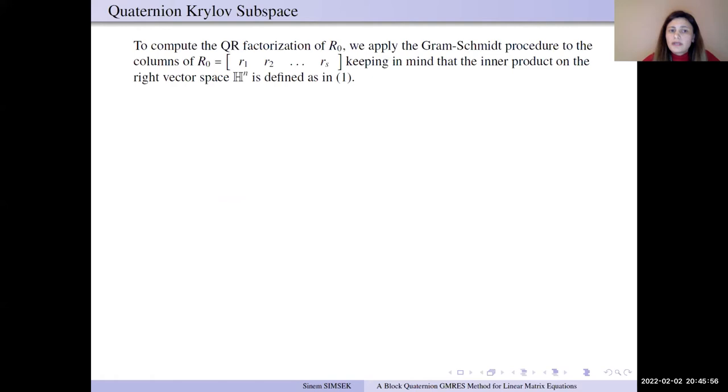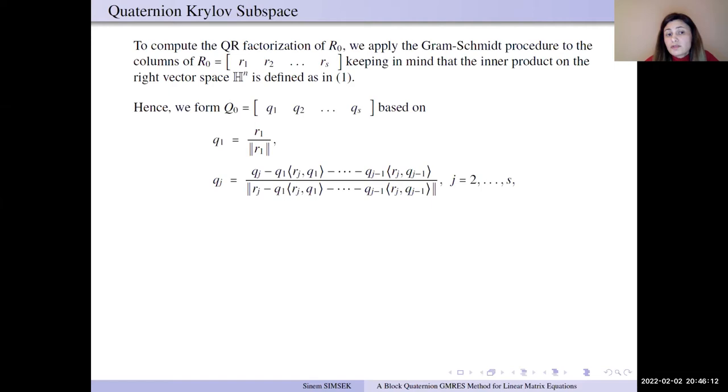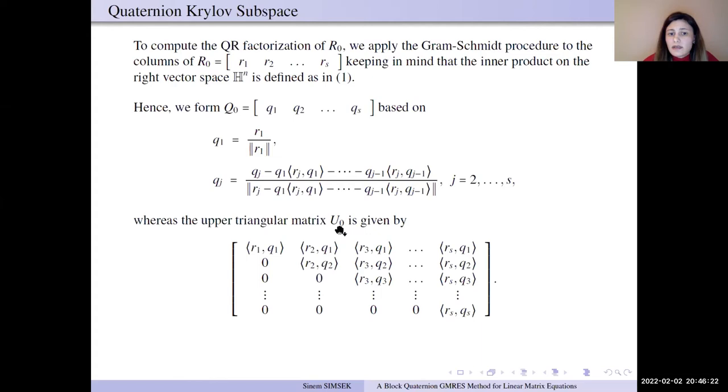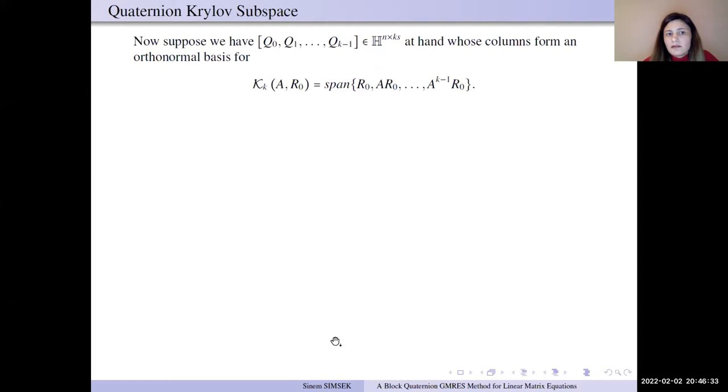To compute QR factorization of r0, we apply Gram-Schmidt method, but keeping in mind the inner products defined previously. Hence, we form the orthogonal columns Q0 based on q1, qj, and upper triangular matrix U0 is given like this. This factorization is the first step of the block Krylov space.